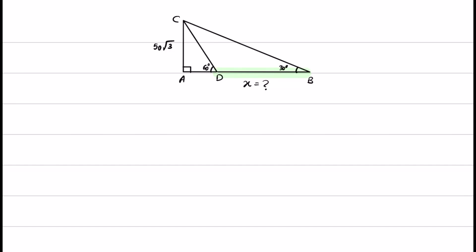In this problem we have triangle ABC which is a right triangle with two angles, 30 degrees and 60 degrees. We know the length of AC which is equal to 50 times square root of 3. The question asks for the length of the highlighted area, which I call X.